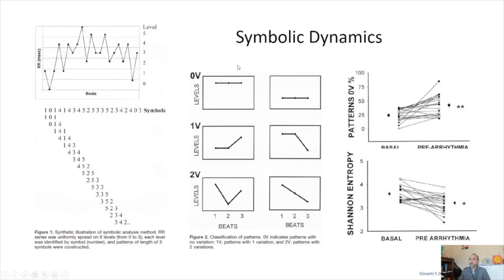Another nonlinear measure methodology is symbolic dynamics. Symbolic dynamics, just like MSE, cares about the consecutive ordering of the RR interval data, but uses symbols to describe the patterns. There are different patterns — some with very low variability, some that maintain consistency but then show later variation, and some with variations in both consecutive measurements. A study published in 2005 by Gazzetti showed that individuals with higher numbers of zero variance patterns tend to be more prone to arrhythmias compared to those who did not develop arrhythmias.